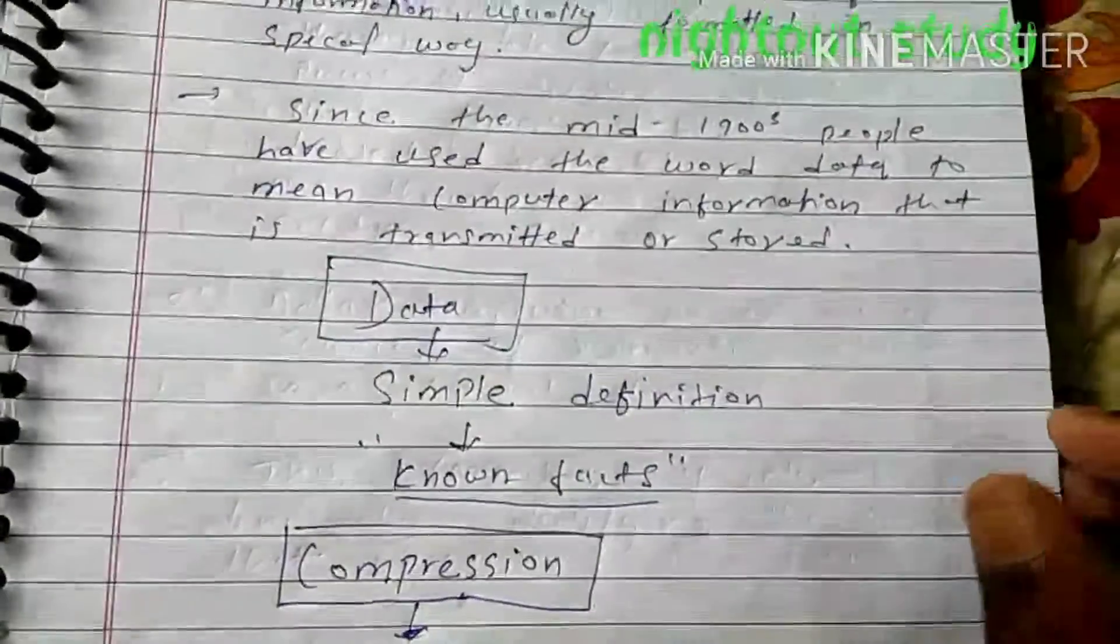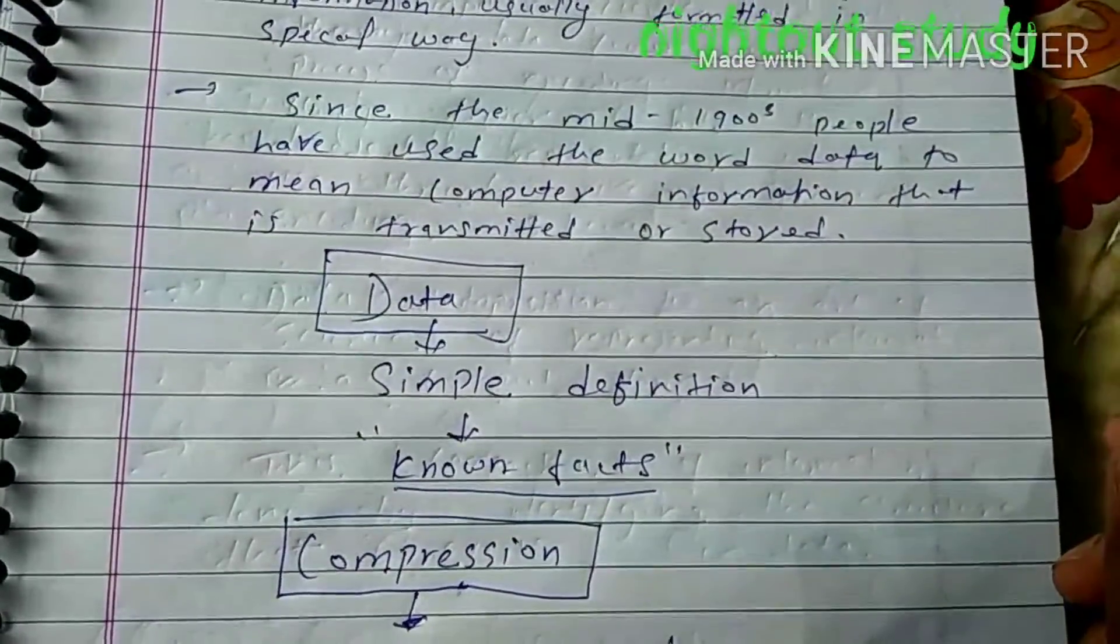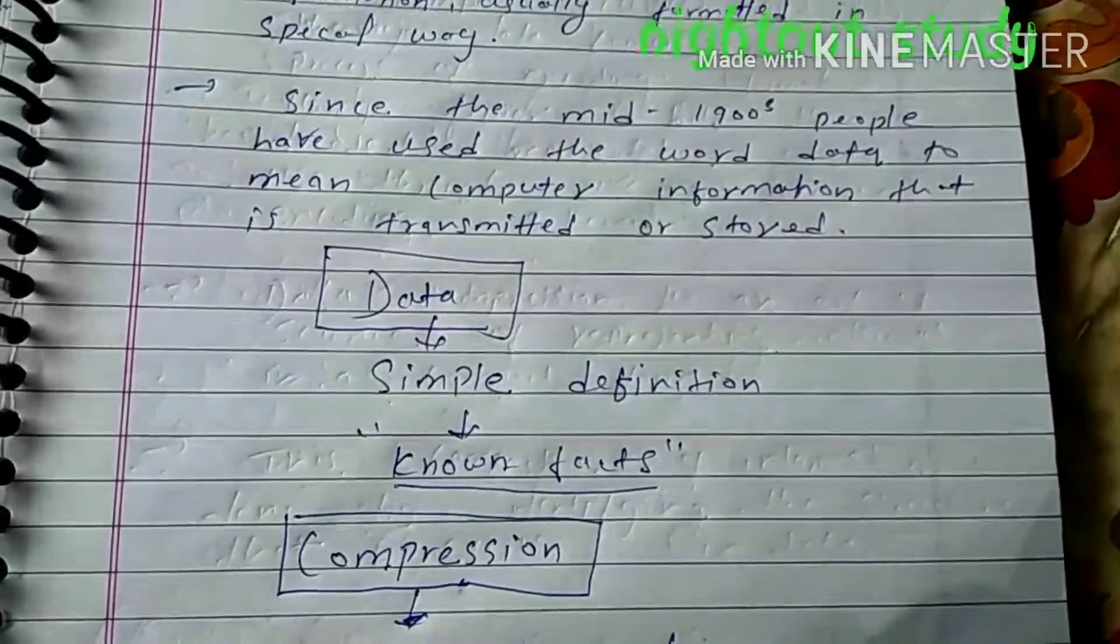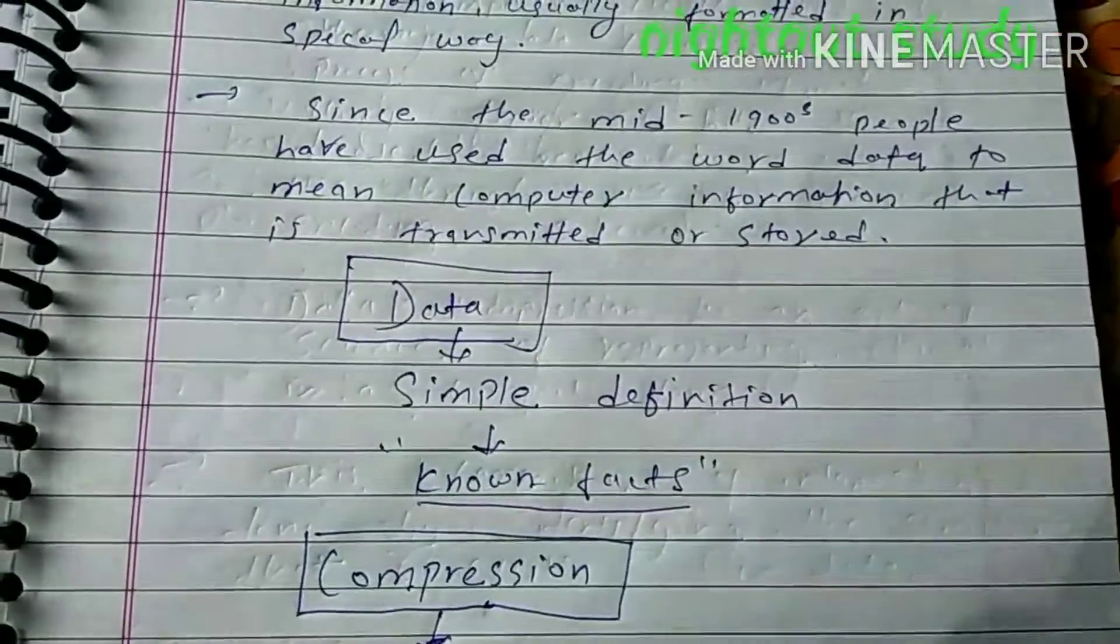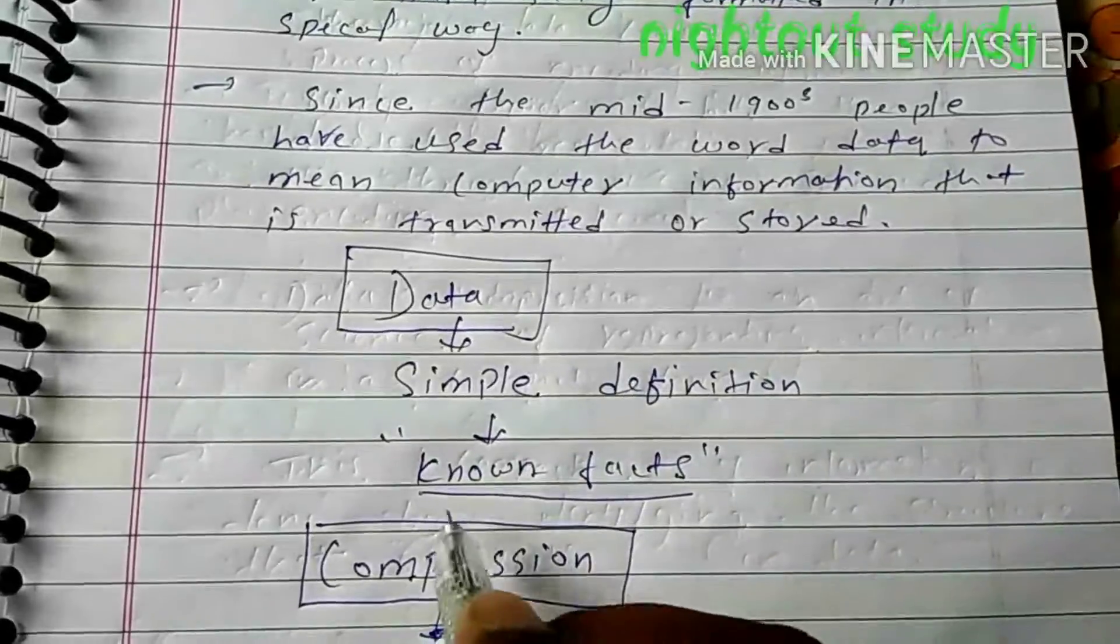Since the mid-1990s, people have used the word data to mean computer information that is transmitted or stored. In simple words, data is just known facts.